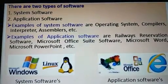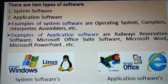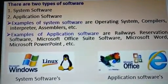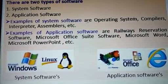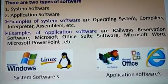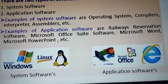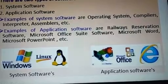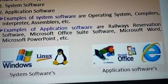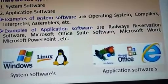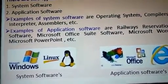We divide software into two categories. The first one is System Software and the second one is Application Software. For System Software we have examples like Windows, Compiler, Interpreter, and Assembler. In the compiler, we convert high-level language to machine language. Assemblers convert assembly language. These are examples of System Software.